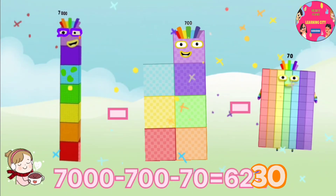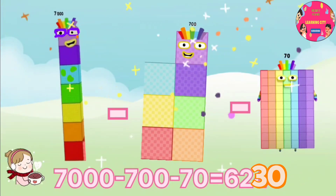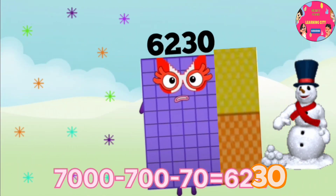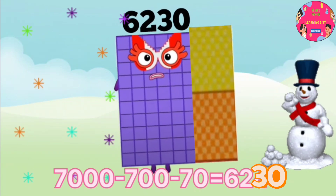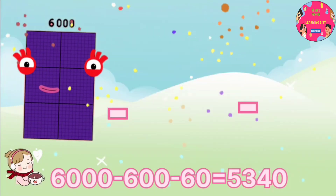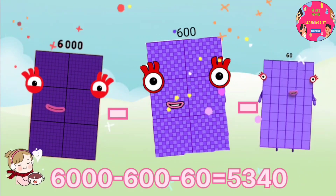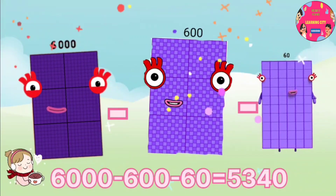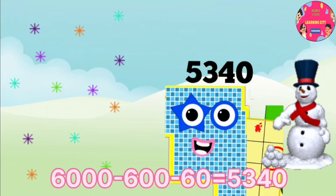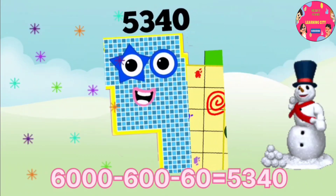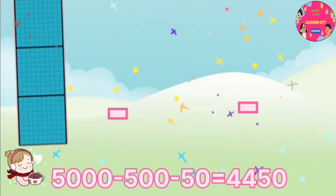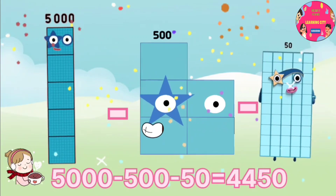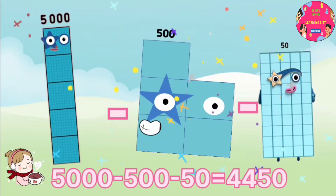7,000 minus 700 minus 70 equals 6,220. 6,000 minus 600 minus 60 equals 5,340. 5,000 minus 500 minus 50 equals 4,450.